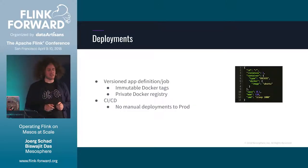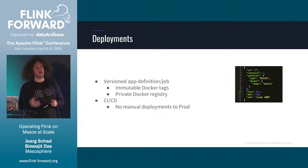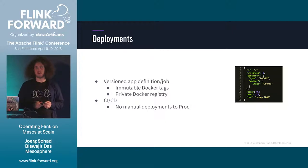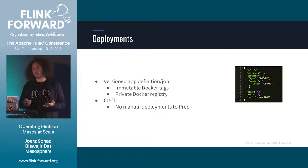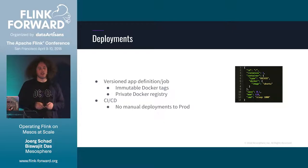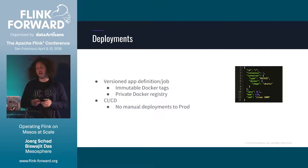First of all — and this is true for any container system — anything going into production should come through some kind of versioned endpoint. With Docker images, you should treat them as immutable because that makes debugging much easier. You can figure out exactly which version was running in production. Otherwise, with 200 machines, you might have half the jobs running on one Docker image version and the other half on another, making debugging and metrics much harder.